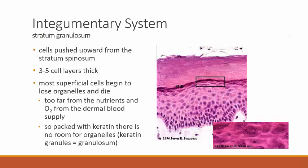Once cells reach the stratum granulosum — about three to five cell layers thick — they begin to lose their organelles and start to die. It's called granulosum because there are lots of keratin granules inside the cells. The keratin crowds out the other organelles, and the cells are now so far from the oxygen and nutrients delivered by the blood supply in the dermis that they simply begin to die.